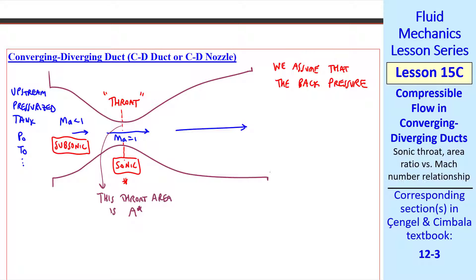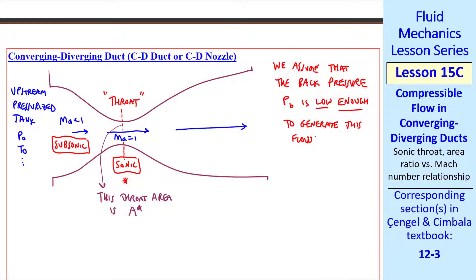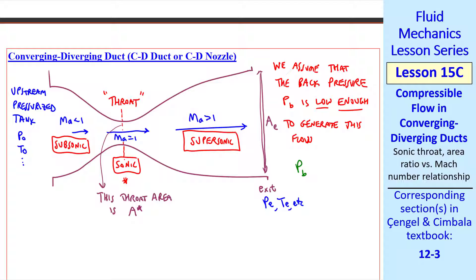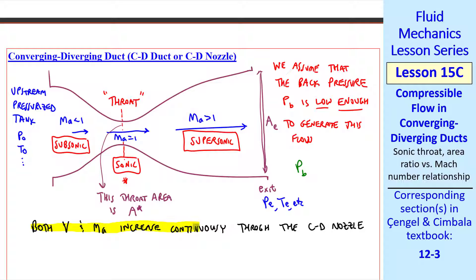I need to make a caveat here. We're assuming that the back pressure P-B is low enough to generate this flow, where P-B is the pressure outside the duct. At the exit plane, this area is A-E. Later we'll be able to calculate pressure P-E, temperature T-E, etc. Once we go downstream of the throat, Mach number is greater than 1 — the flow is supersonic. We note that both velocity V and Mach number increase continuously through the CD nozzle, all the way from zero, accelerating through the subsonic portion, sonic at the throat, and then continuously accelerating through the supersonic portion.